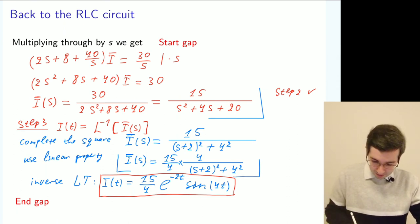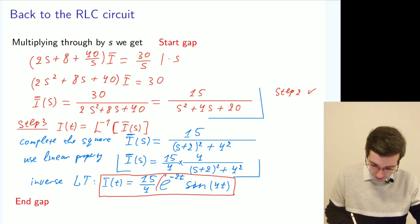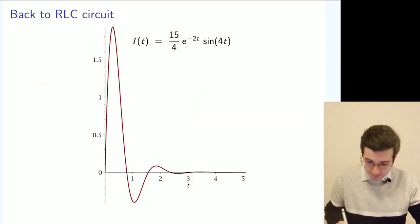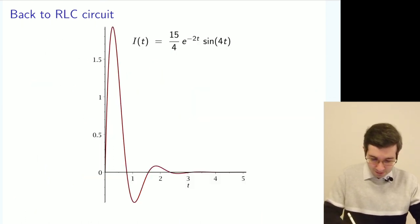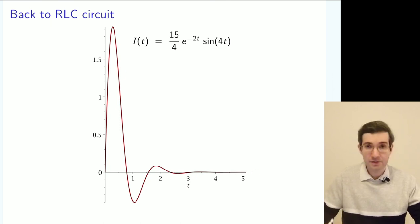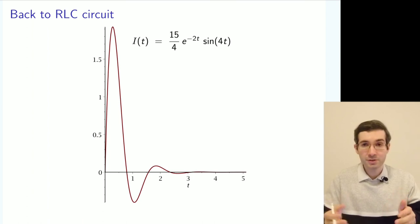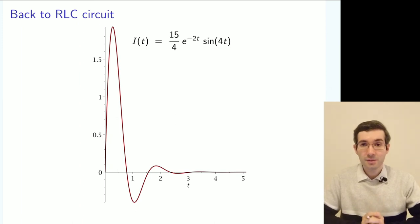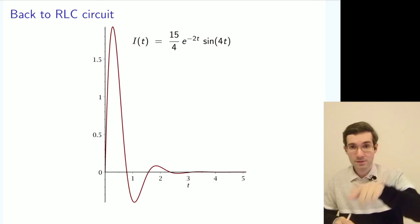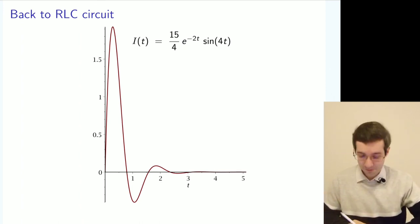So you have a factor which is getting small with time and also an oscillation factor. So if you look at this graph, you indeed see that it's a function which oscillates and then dies out. So that's a response of an electric circuit to applying a constant potential difference at time zero. So it switches on and then it relaxes to the zero current.